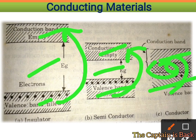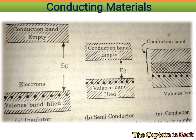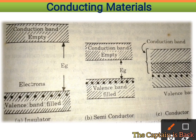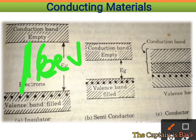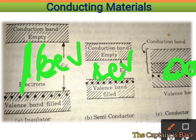The energy gap for an insulator is around 6 electron volts. For a semiconductor, the energy gap is around 1 electron volt. For a conductor, the bands overlap, giving an energy gap of zero electron volts.